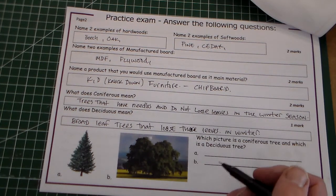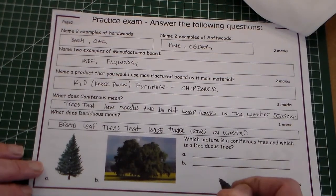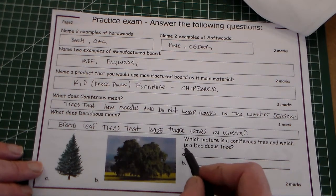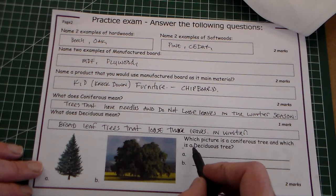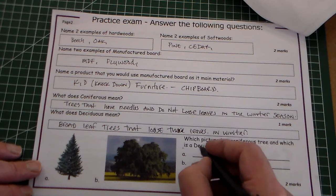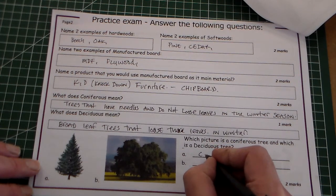And then two pictures here. Which picture is a coniferous tree and which is a deciduous tree? Obviously A is the coniferous tree.